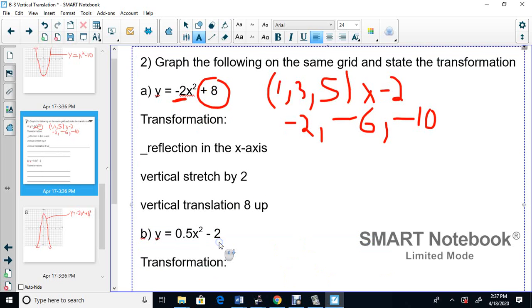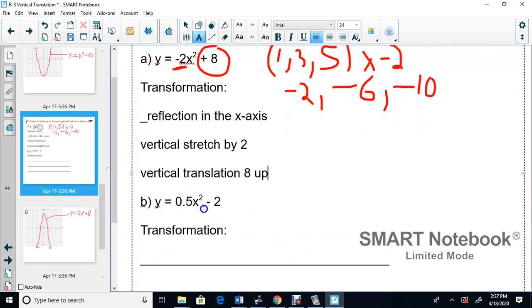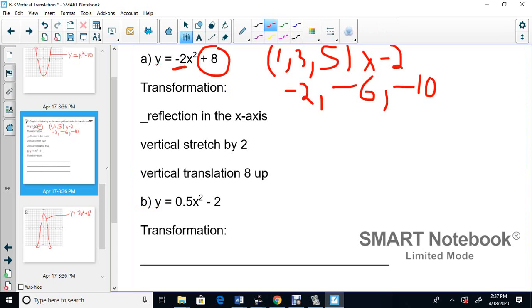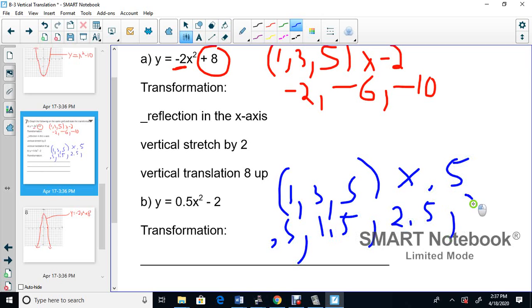I'm going to graph this here: y equals 0.5x squared minus 2. This is the shape, the 0.5 is the shape. So again, we're going to use a different color here, it's blue, so we can tell the difference. 1, 3, 5, we multiply that by 0.5, so you get 0.5, 1.5, 2.5, 3.5. Our starting point is negative 2.